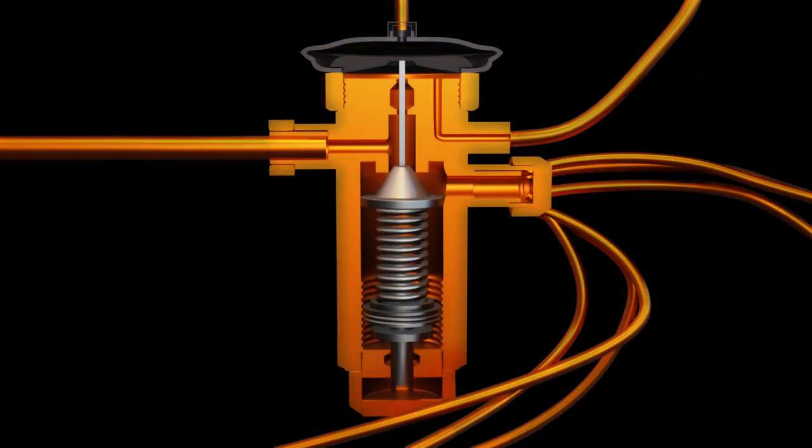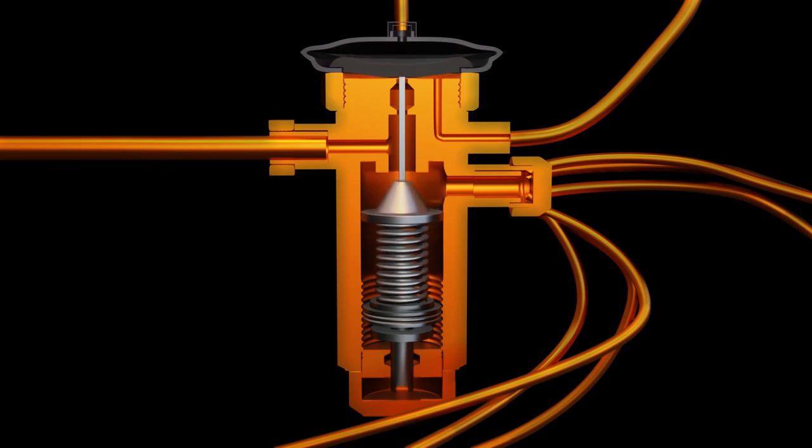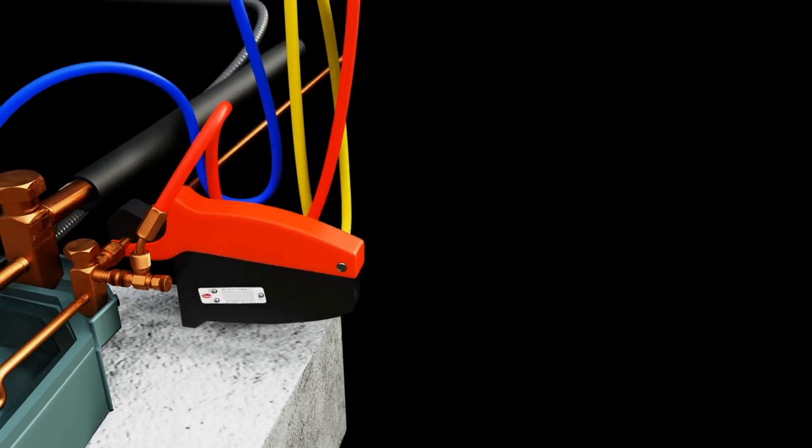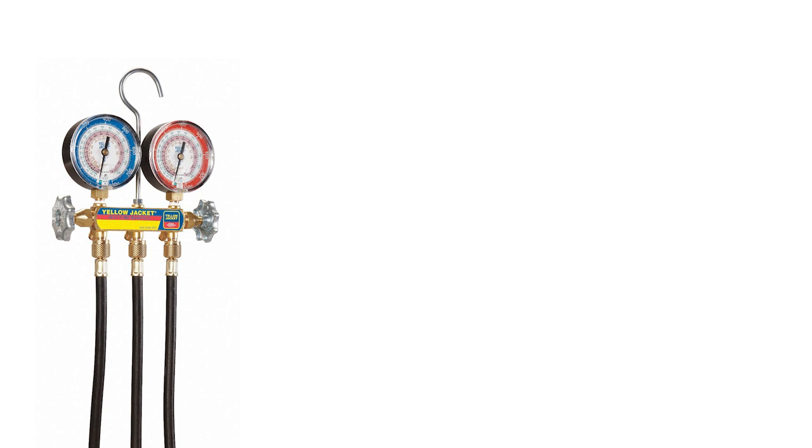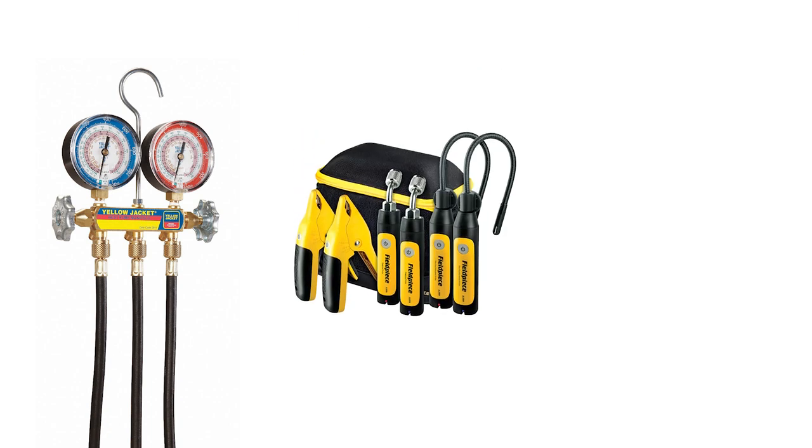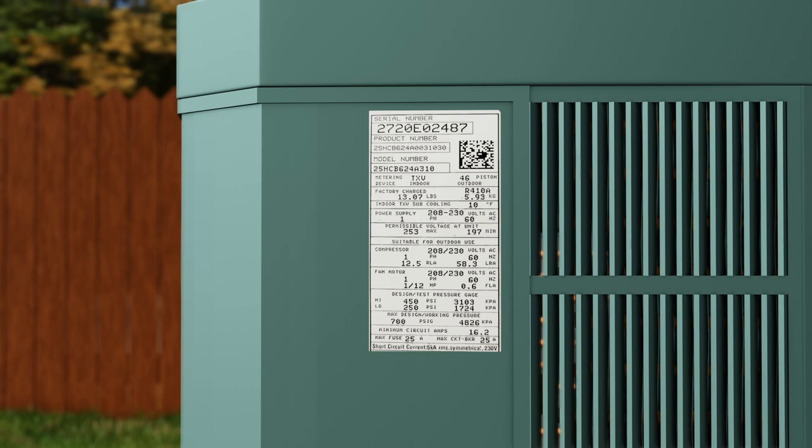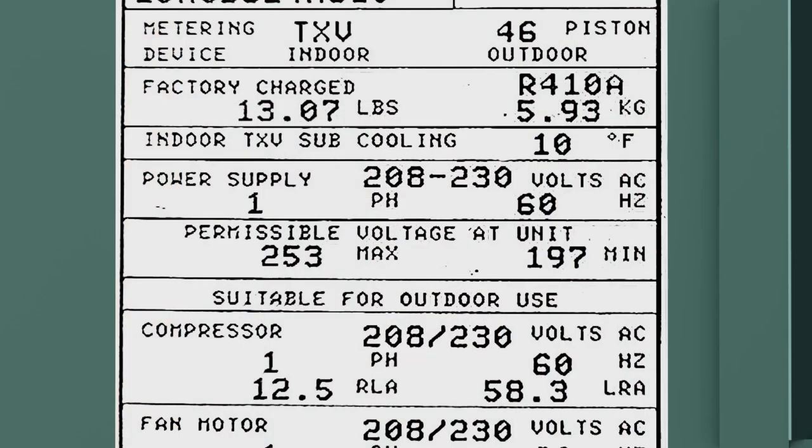We're going to just make the assumption this is a TXV system on the inside. You would actually have to check that to make sure that it is a TXV inside. We need to connect a line temperature clamp in order to measure our liquid line temperature. You can do this with either an analog manifold or with a digital set of probes or digital gauge. Because this is a TXV system, we need to check and see what our indoor TXV subcooling should be. That's the number that we want to hit.